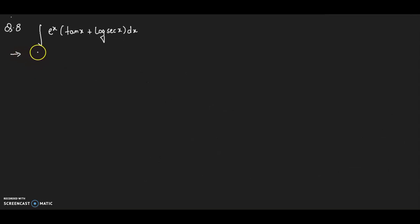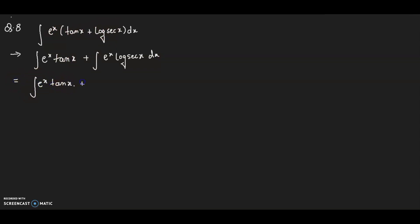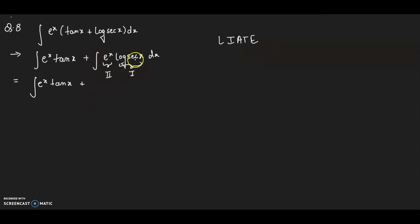Next question: integration of eˣ(tan x + log sec x) dx. We apply the LIATE rule here. I take log(sec x) as the first function and eˣ as the second, because LIATE places logarithmic functions before exponential. Applying integration by parts: log(sec x) · eˣ minus integration of (d/dx of log sec x) times eˣ dx.